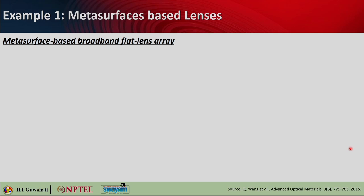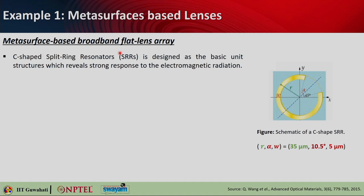Let us take one particular example of a lens design based on metasurfaces. Here we are going to design a metasurface-based broadband flat lens array. This is the unit cell design to start with — it is basically a C-shaped split-ring resonator, and this dashed line is basically the symmetry axis. You can see the symmetry axis makes a 45-degree angle with the x-axis. The schematic of this C-shaped SRR shows that the outer radius of the ring is 35 microns, alpha is the opening angle of 10.5 degrees, and W is the width of the ring at 5 microns.